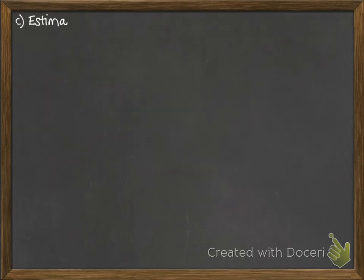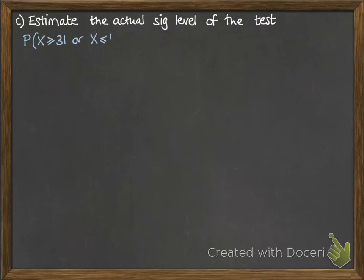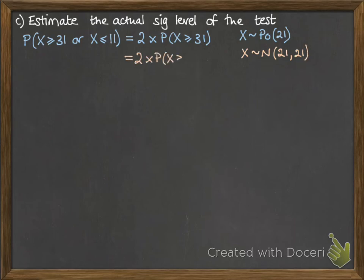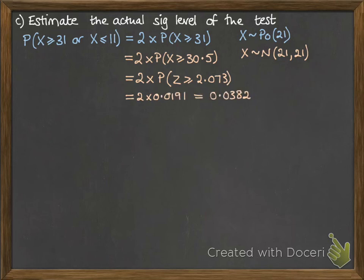So now the next question, we want to estimate the actual significance level of the test. So the probability that x did fall in those regions that we just calculated, given that x follows a Poisson distribution of 21. So we can just do one half of that and double it, since it's symmetrical. We'll use a normal approximation again, and then continue on with those calculations. Make sure you apply the continuity correction. So we're working to a 3.8% significance level here.